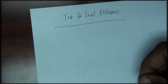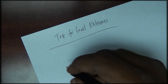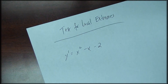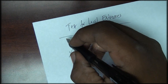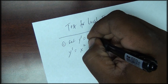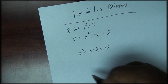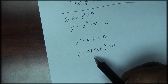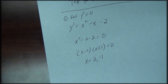We take our first derivative, x squared minus x minus 2, and set it equal to zero. Solving by factoring and applying the zero factor property, we get the critical numbers x equals 2 and x equals negative 1.